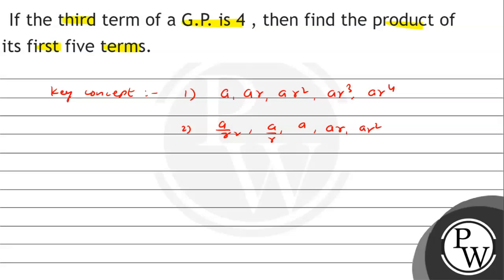If we use the first concept, then we know that for method one, given that the third term a r square is given as 4, so the product of all five terms, the product is equal to...